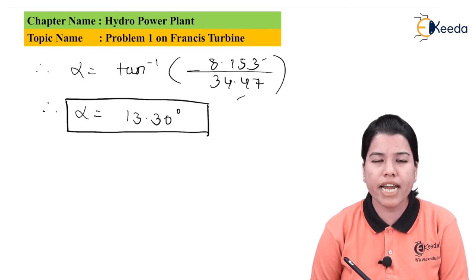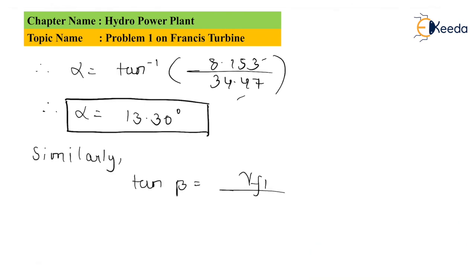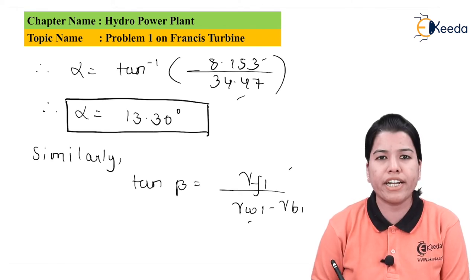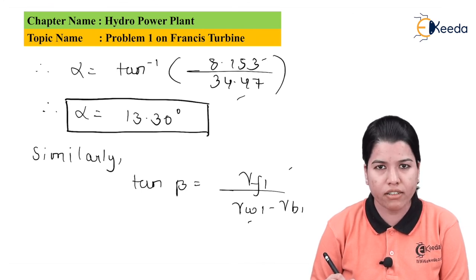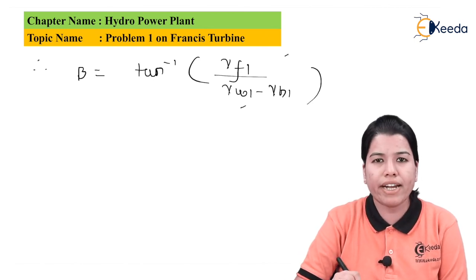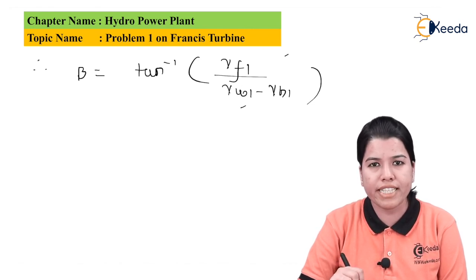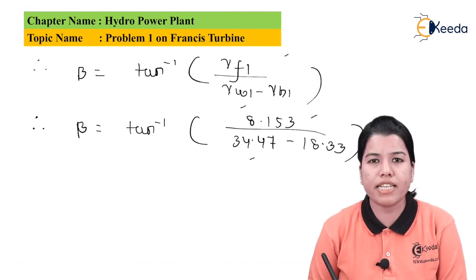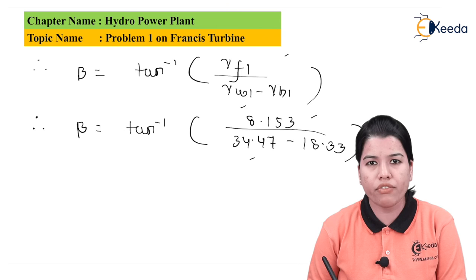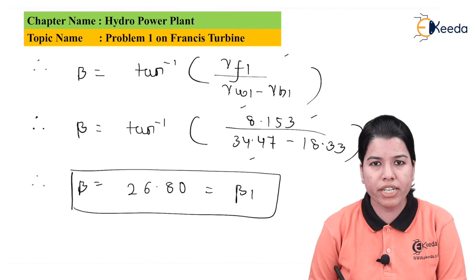The runner inlet vane angle beta1 is found using tan(β1) = Vf1 ÷ (VW1 − VB1). Therefore, β1 = tan⁻¹(8.153 ÷ (34.47 − 18.33)) = tan⁻¹(8.153 ÷ 16.14) = 26.80 degrees.